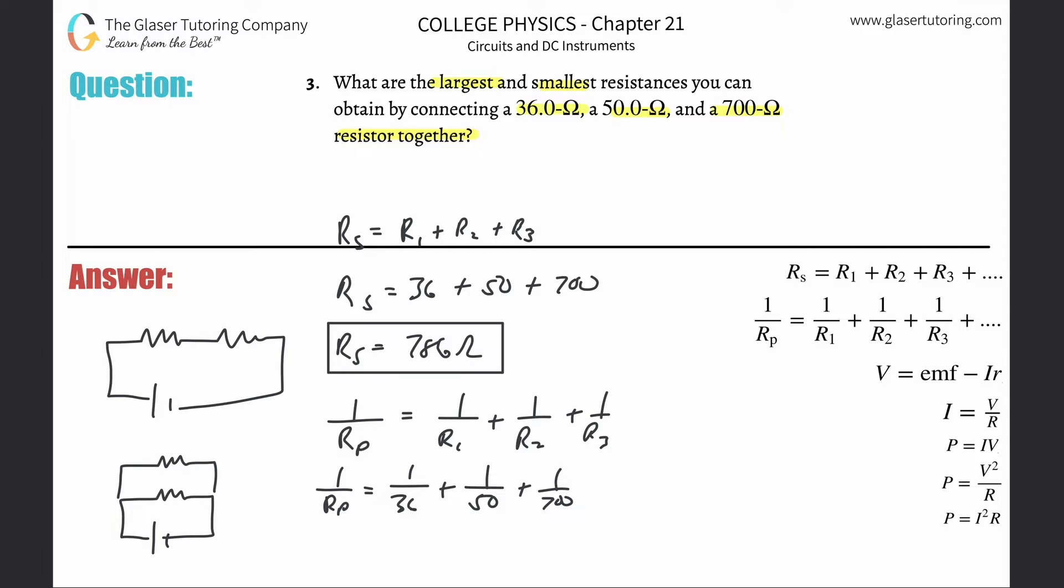So it's now going to be 1 over 36 plus 1 over 50 plus 1 over 700, and that comes out to be a decimal. Now careful, that is not the final answer. Why? Well, because this is 1 over the resistance in parallel. We don't want to know 1 over the resistance in parallel, we want to know just the resistance in parallel.